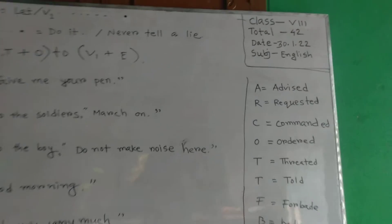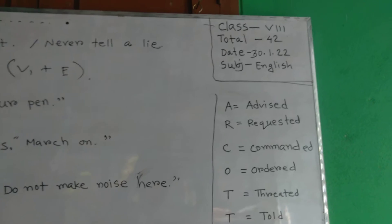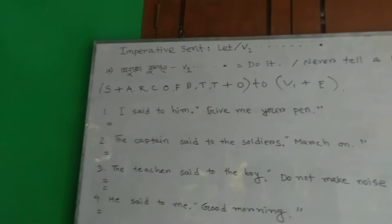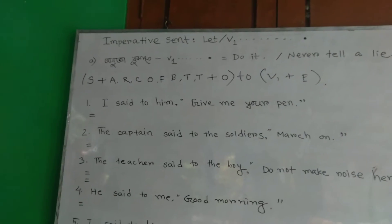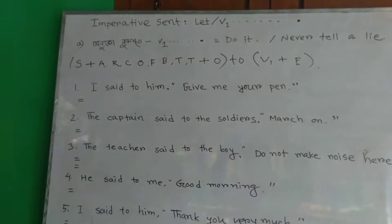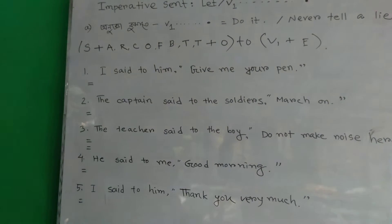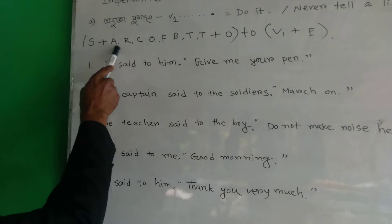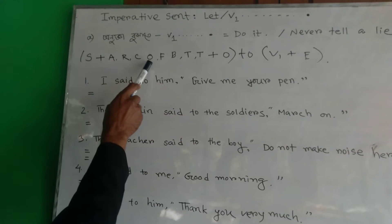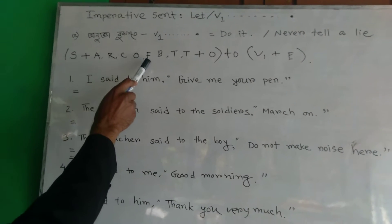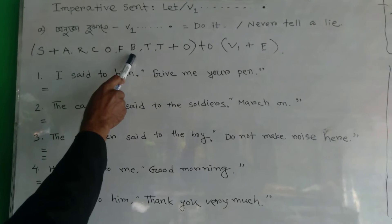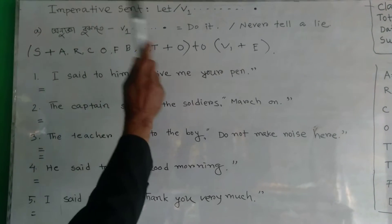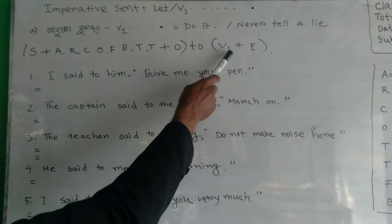Now look at the board and note some important things. There are three types of imperative sentences. One starts from a verb and it is compulsory. The key letters are: A for advice, R for request, C for command, O for order, F for forbid, B for bade, T for threat, T for told.